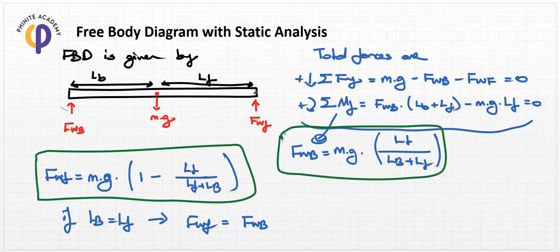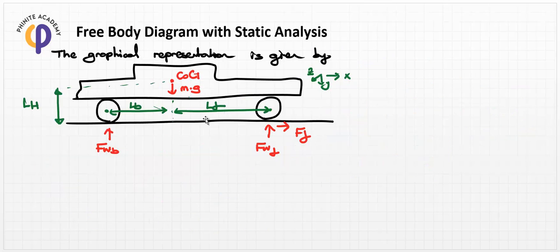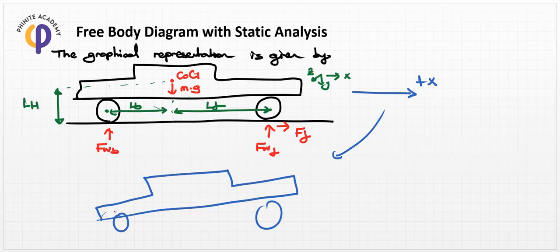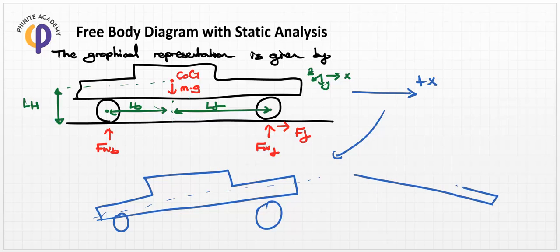We can now move to the dynamic analysis. In the dynamic case, if we accelerate in the X direction, the car shape changes. In real life you cannot observe this because the suspension system eliminates this factor, but in realistic modeling the center of gravity shifts with a theta value — a deflection in the Z direction. If you apply braking, the car tilts in the opposite direction.